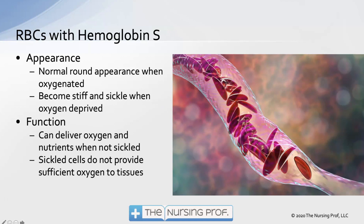However, we have situations where patients will have what's called hemoglobin S. With hemoglobin S, they will have a normal looking round appearance when oxygenated and may completely function as normal red blood cells. However, when they're oxygen deprived or dehydrated, they will become stiff and sickle. Once these cells sickle, they're no longer able to carry out normal hemoglobin functions — oxygen carrying capacity and buffering pH in the body.